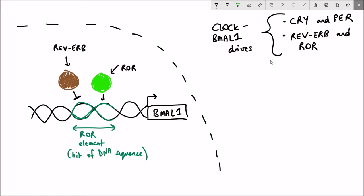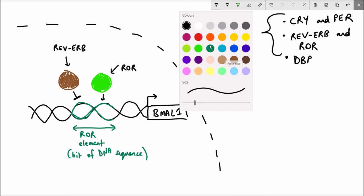The third loop considered to be most important for the regulation of the circadian clock is DBP, which is the D-box binding protein.